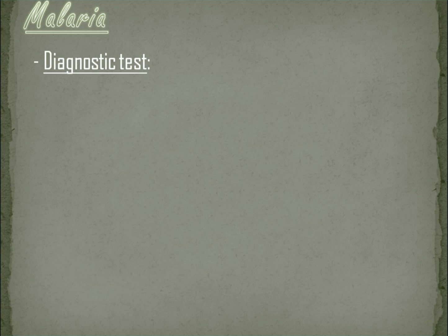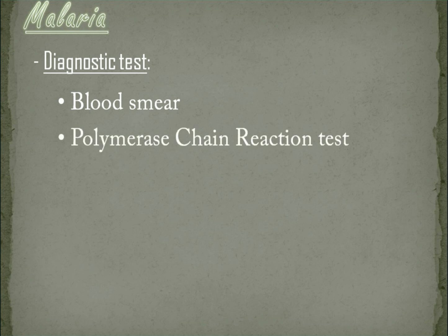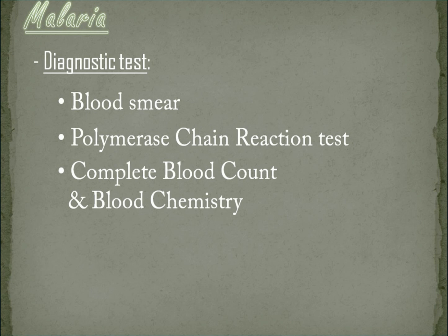Diagnostic tests. Blood smear — this is to show the presence or the number of malaria parasites in the blood. Molecular tests, also known as polymerase chain reaction tests, can identify the type of parasite and help the doctor in prescribing medication. Lastly, blood tests like complete blood count and blood chemistry — results will show the severity of the infection and if it is causing complications like anemia or kidney failure.